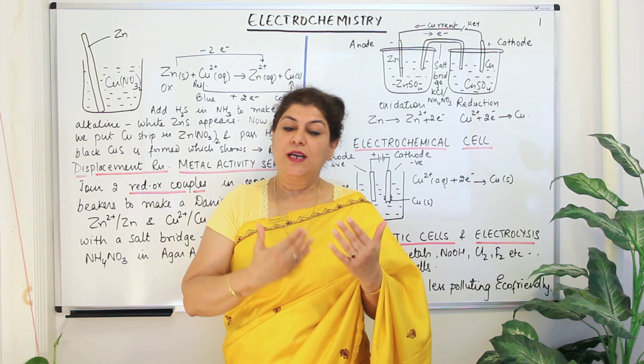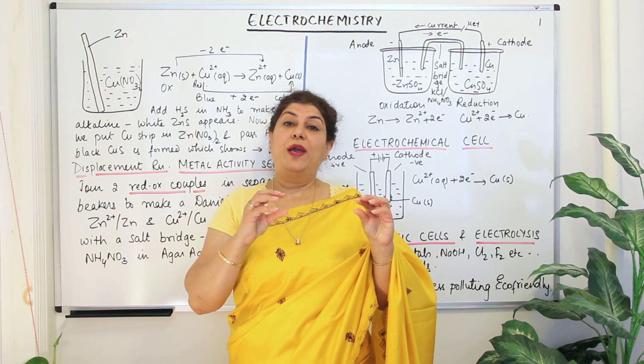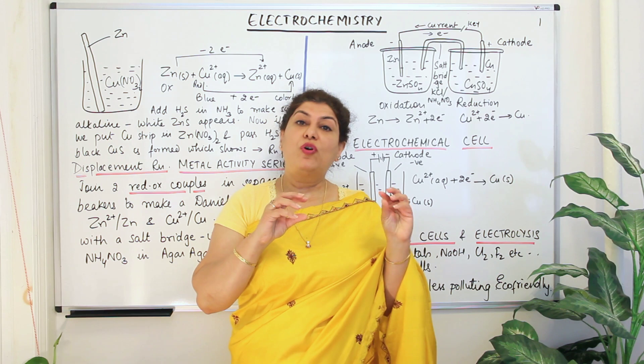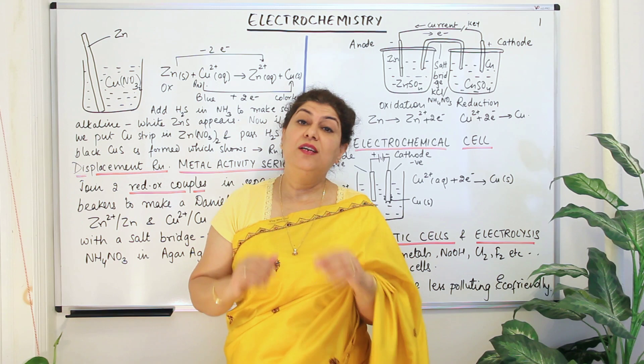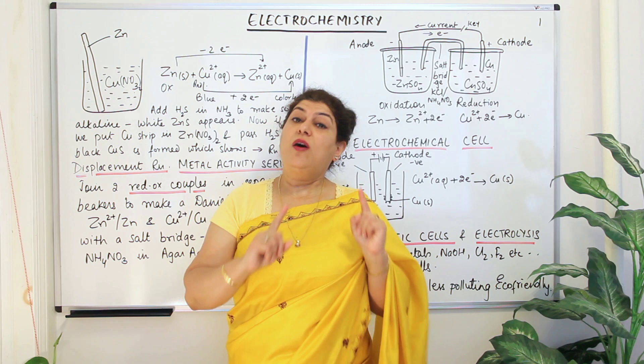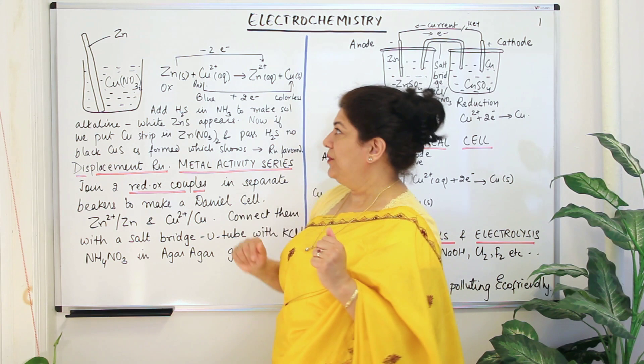Before we come to the details, let me just recapitulate a little bit of what we've studied in class 11 and class 10. If you remember, we studied displacement reactions. Displacement reactions are where two ions compete with each other and the one that is more reactive tends to take the place of a lesser reactive ion from its salt. These are also redox reactions — that is, reduction and oxidation occur during such a displacement.